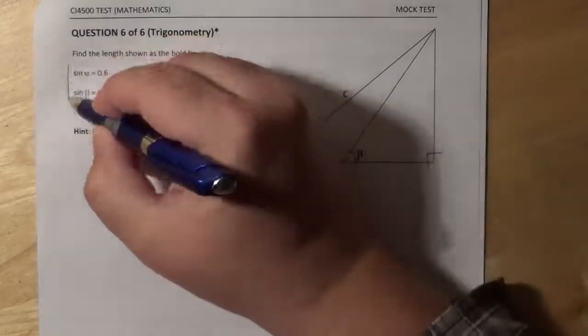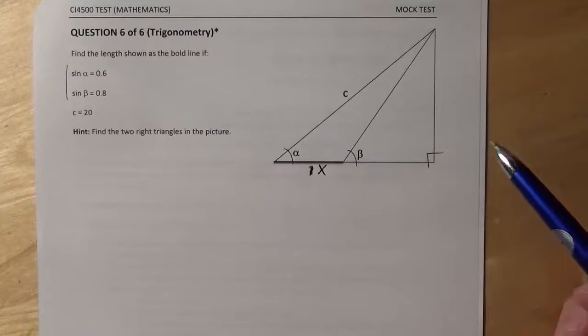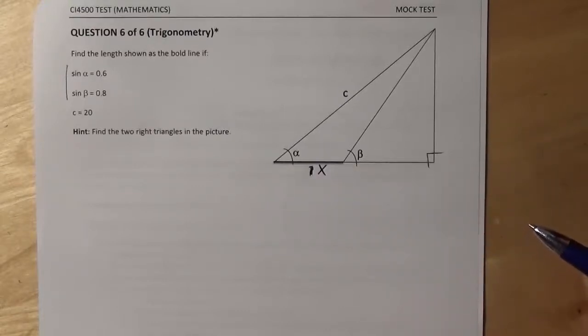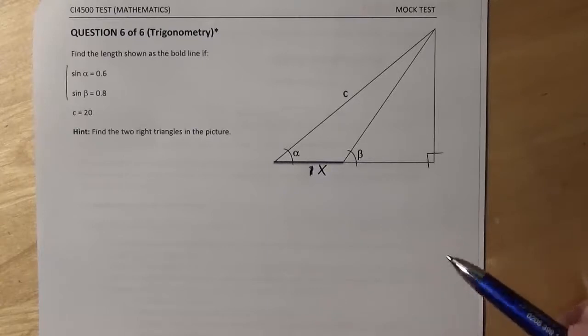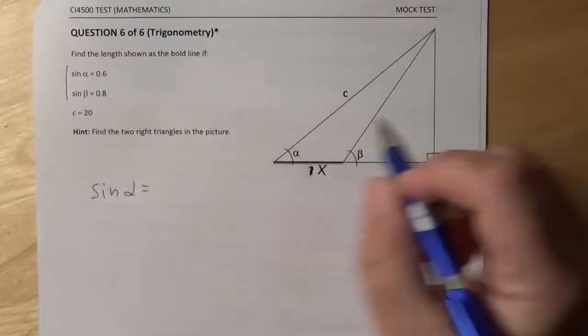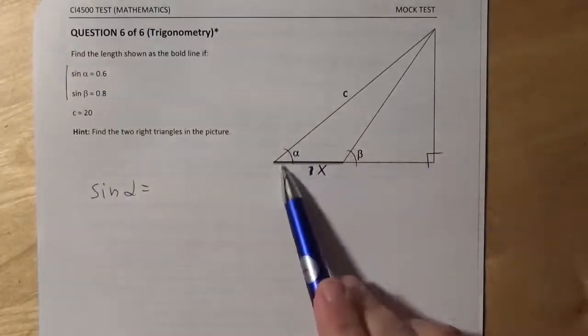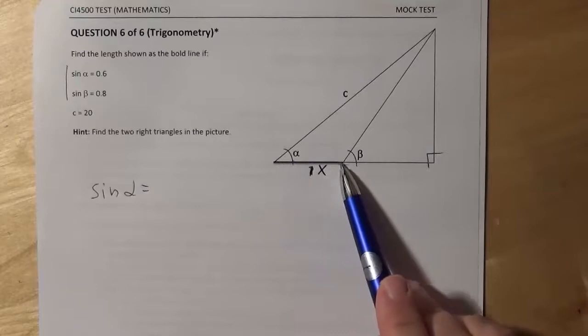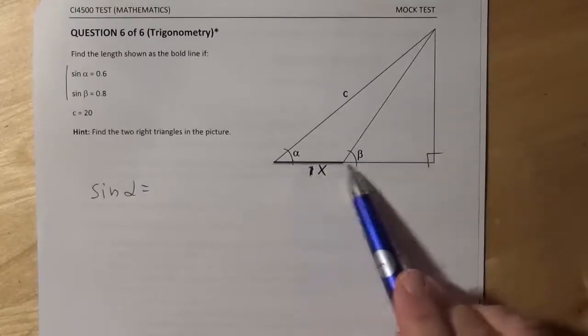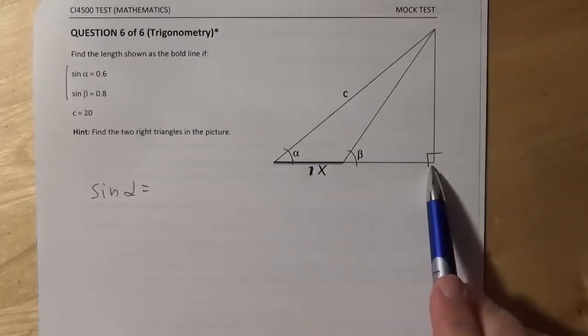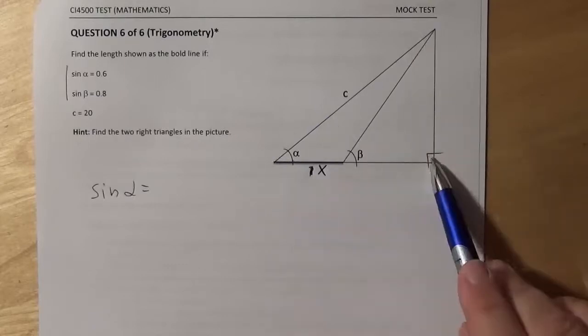Looking at the data we have, we have the values of sine of these two angles, which gives us a possibility to write down a couple of mathematical relations. So first of all, sine alpha. The alpha is a part of this big triangle. So please be very careful not to consider alpha. Of course, it technically is a part of this triangle here, but this triangle is not interesting for us because this is not a right triangle.